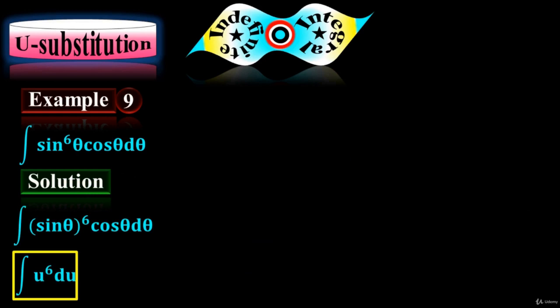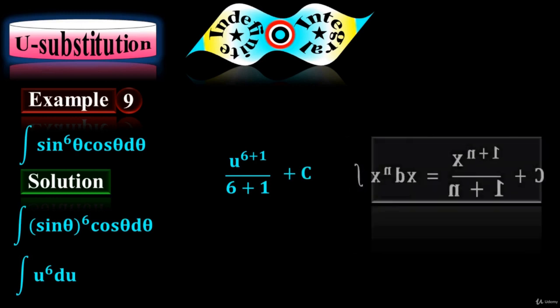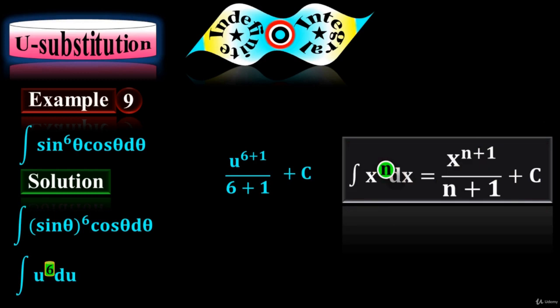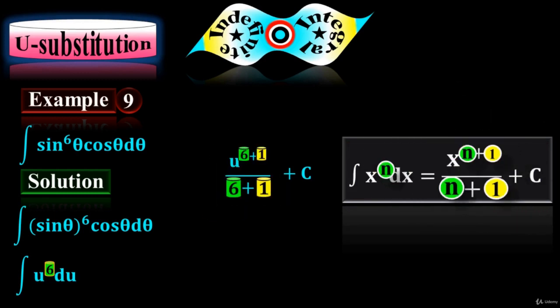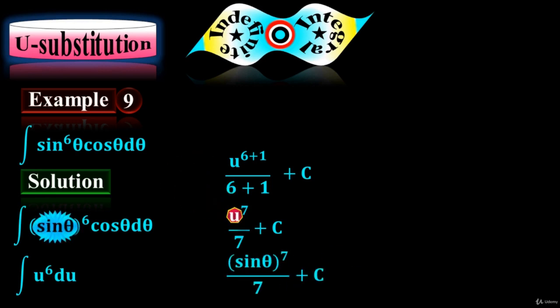Take the integration of u to the 6th with respect to u. Integrating gives u to the 6 plus 1 over 6 plus 1, plus an arbitrary constant — applying the power rule where n equals 6. The final expression is u⁷ over 7 plus C. Substituting back u = sin(θ), the final answer is sin⁷(θ) over 7 plus C.